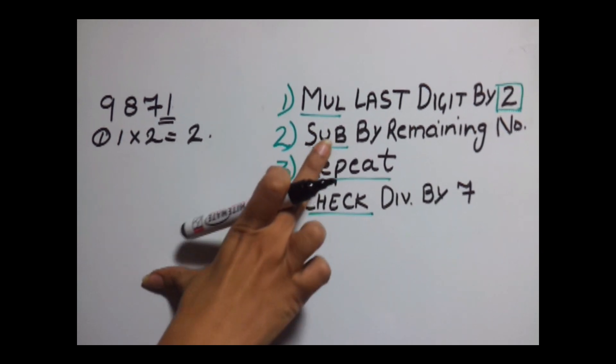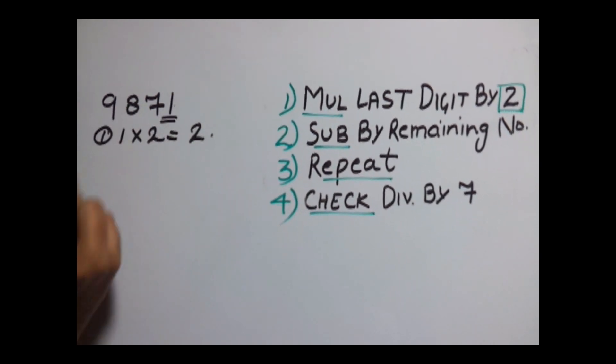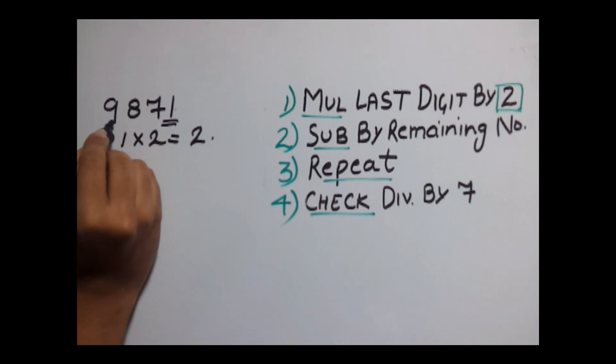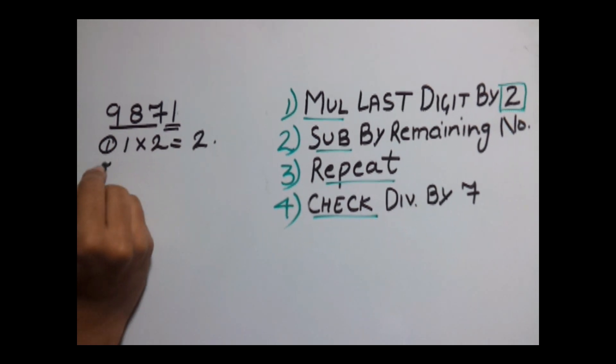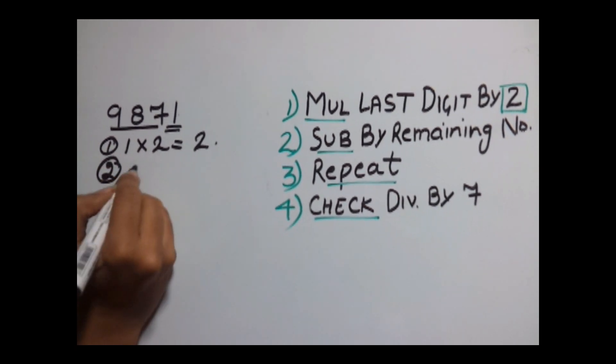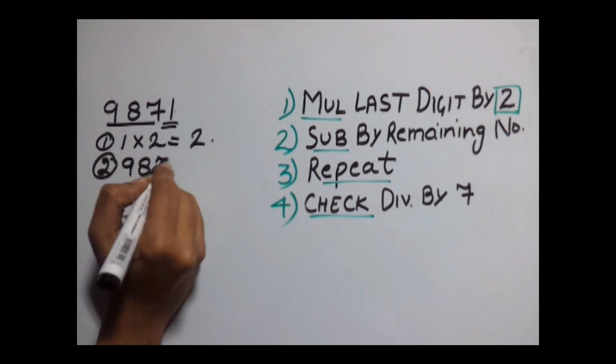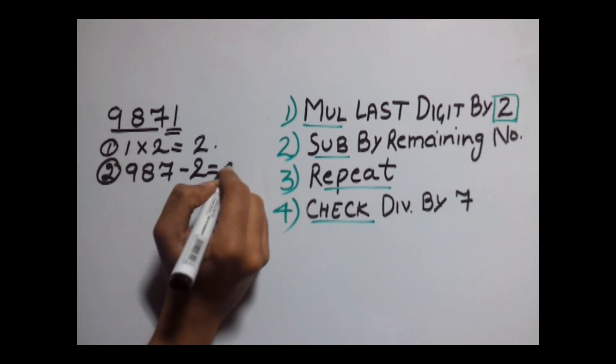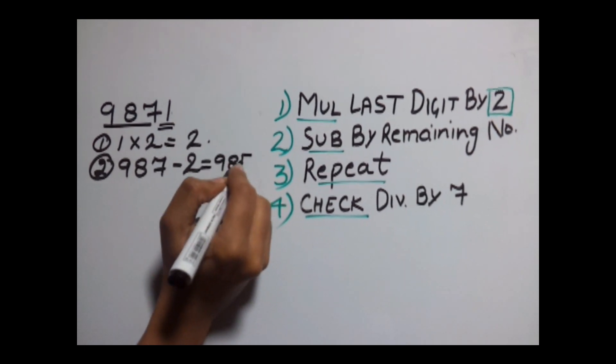Our second step is to subtract this from the remaining number. So our remaining number is 987. Subtracting this from 987 gives us 985.